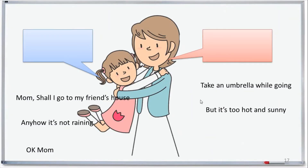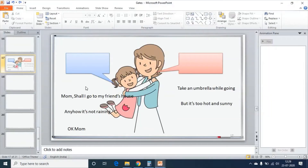This is how it looks, but we don't need it like this. We need the mother and daughter first, then the callout should come, then the dialogue, then mother's callout, mother's dialogue, and that followed by the remaining dialogues. Let us start our animations.